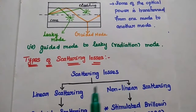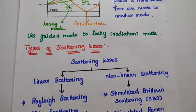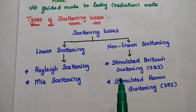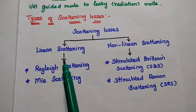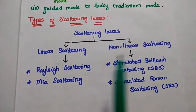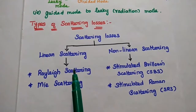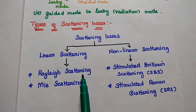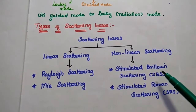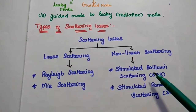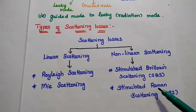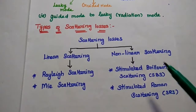Leaky mode is also called radiation mode. There are different types of scattering losses in optical communication. One is linear scattering, and the next is non-linear scattering. There are two types in linear scattering: Rayleigh scattering and Mie scattering. In non-linear scattering, there are two types: stimulated Brillouin scattering (SBS) and stimulated Raman scattering (SRS).